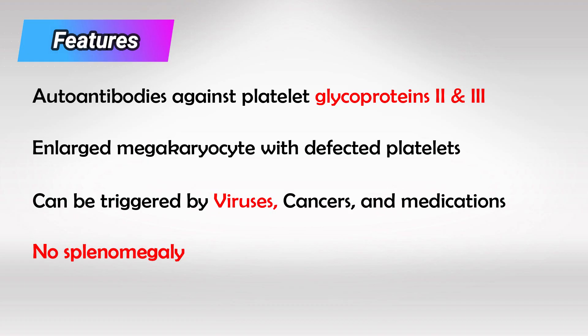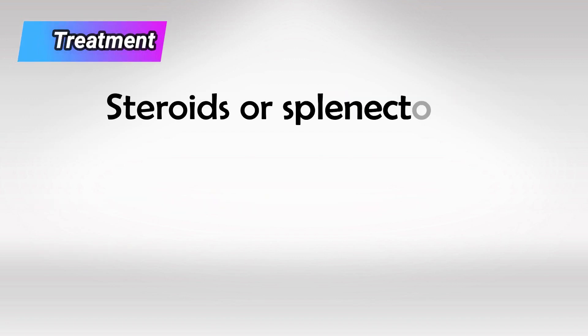To recap, ITP is caused by autoantibodies against the platelets. This destroys the platelets, and if we take a blood sample, we'll only see decreased platelets with everything else normal. A bone marrow biopsy will show increased size of megakaryocytes. There is no splenomegaly. The treatment is steroids, or better yet, splenectomy.